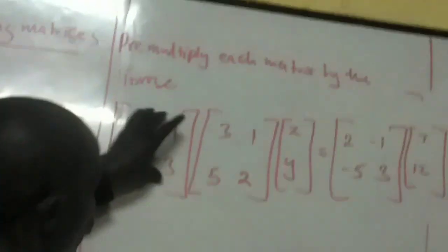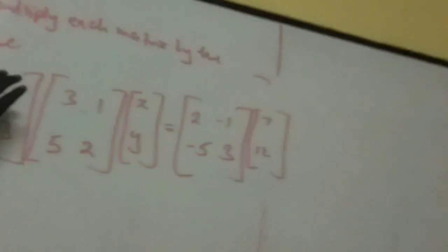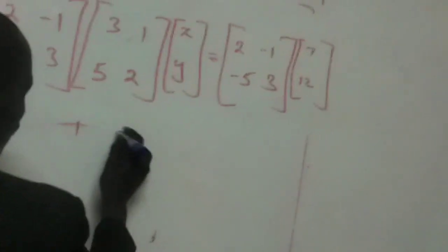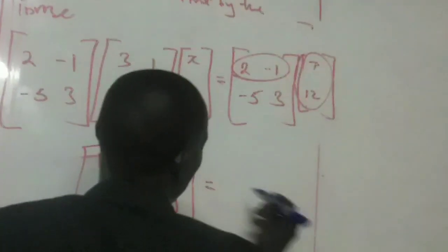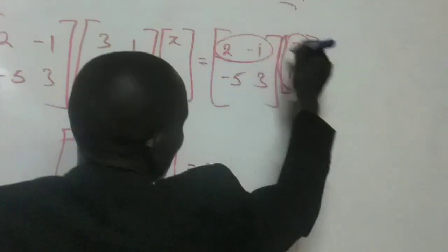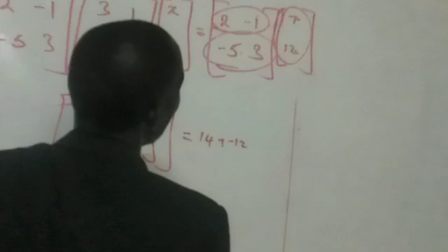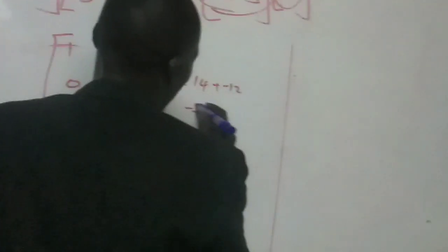We multiply this matrix by this. From our previous discussion, when you multiply a matrix by its inverse you get the identity matrix. So this gives us the identity matrix [1, 0, 0, 1] times [x, y]. On the right side, we multiply: 2 times 7 is 14, plus negative 1 times 12 is negative 12. Then negative 5 times 7 is negative 35, plus 3 times 12, which is 36.